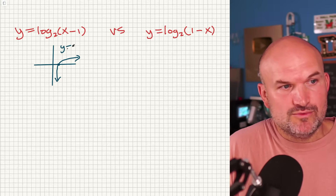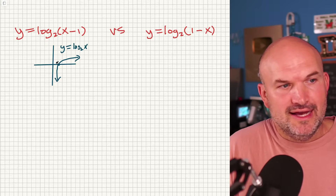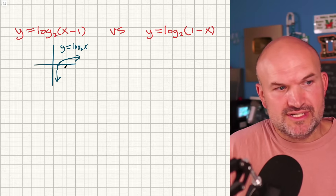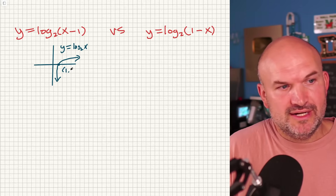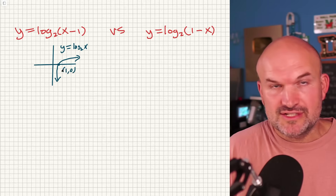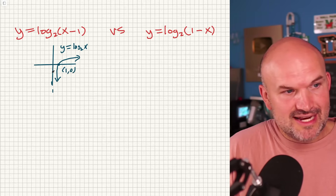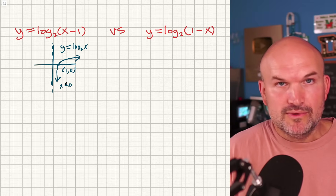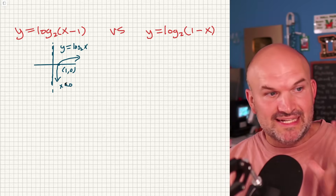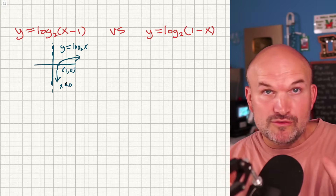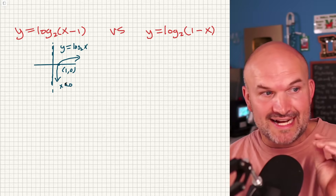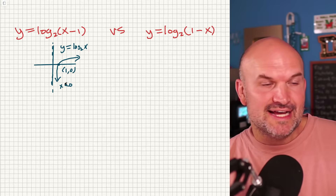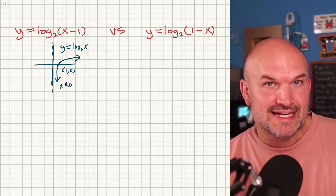So the parent function is y equals log base 2 of x. We need to understand two important characteristics: the first is the x-intercept at (1, 0), and the second is the vertical asymptote at x equals 0. When applying transformations, we need to move both that x-intercept and that vertical asymptote.